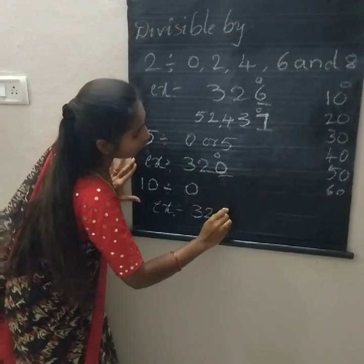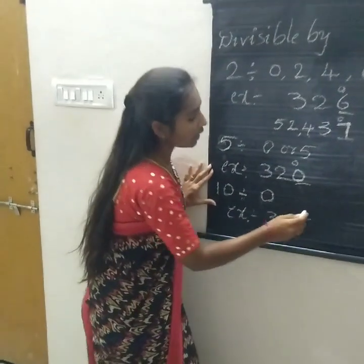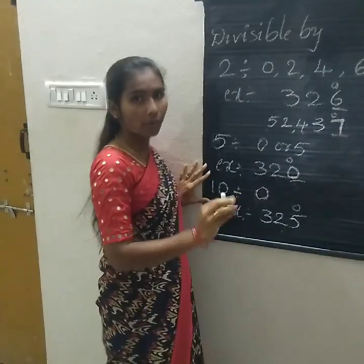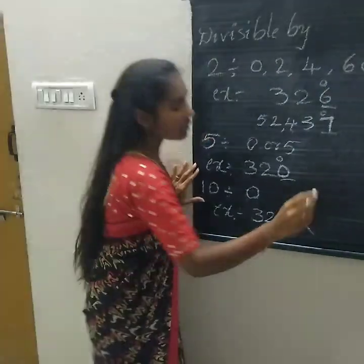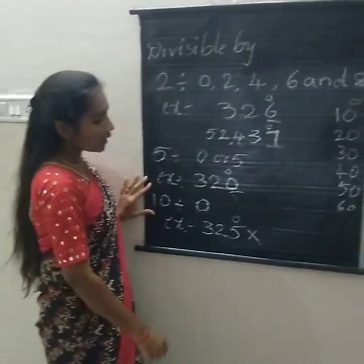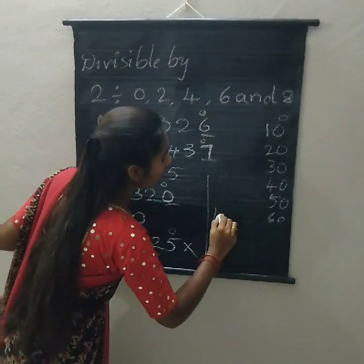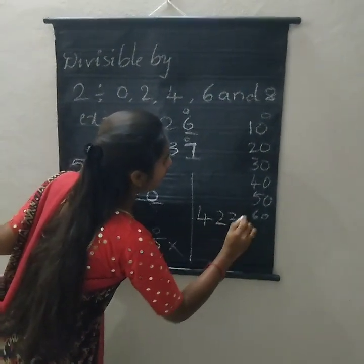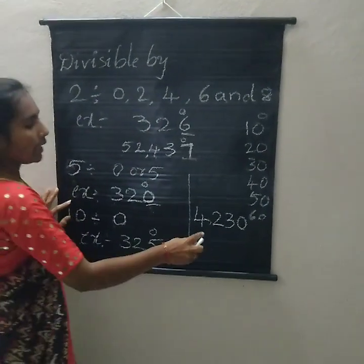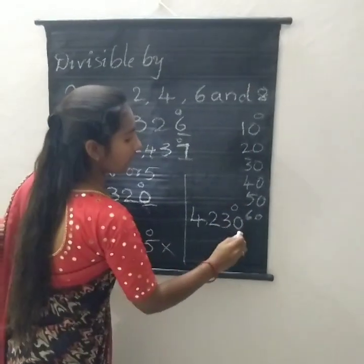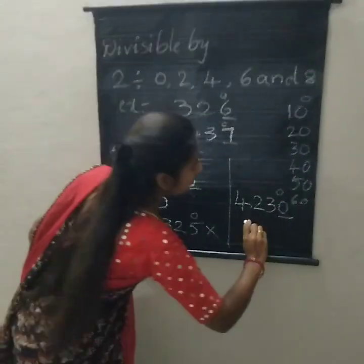Example: 325. In this number the one's place is 5, so is this divisible by 10? No, this number is not divisible by 10. Next example: 4,230. In this number the one's place is 0, so this number is divisible by 10.